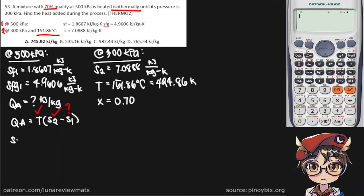So to find our entropy we can simply use this equation. We have all of these so we can simply put this in our calculator: this one is SF1, 1.8607.